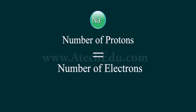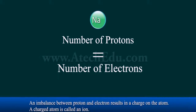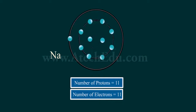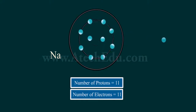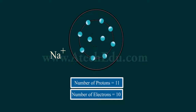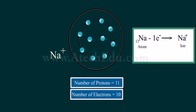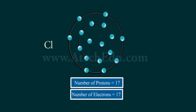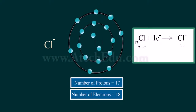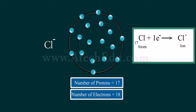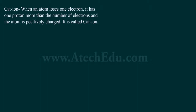In a neutral atom, the number of protons equals the number of electrons. An imbalance between protons and electrons results in a charge on the atom — a charged atom is called an ion. In a sodium atom, the number of protons and electrons are both equal to 11. When sodium loses one electron, it has one more proton than electrons and becomes positively charged. In a chlorine atom, protons and electrons are both equal to 17. When chlorine gains one electron, it has one more electron than protons and becomes negatively charged.